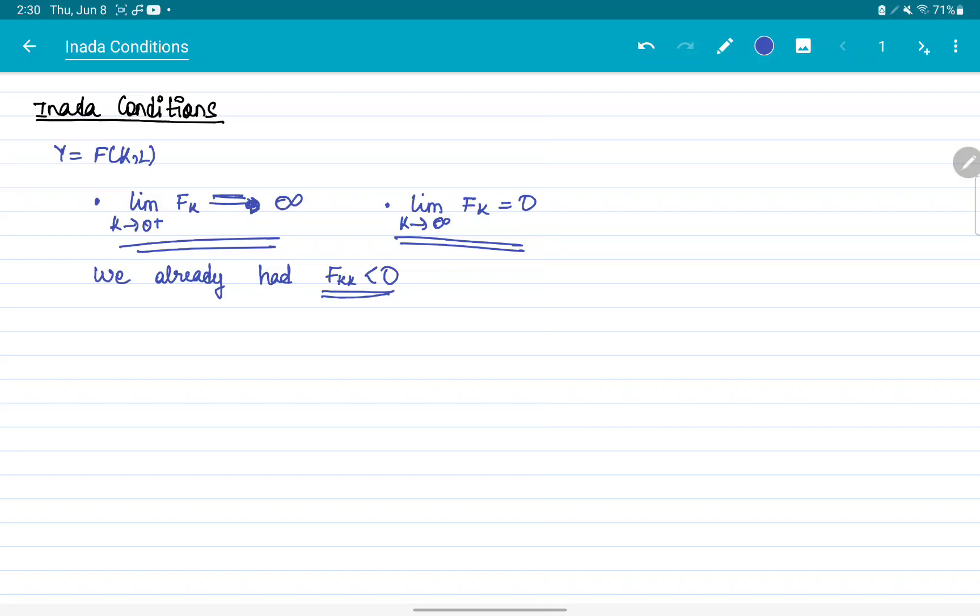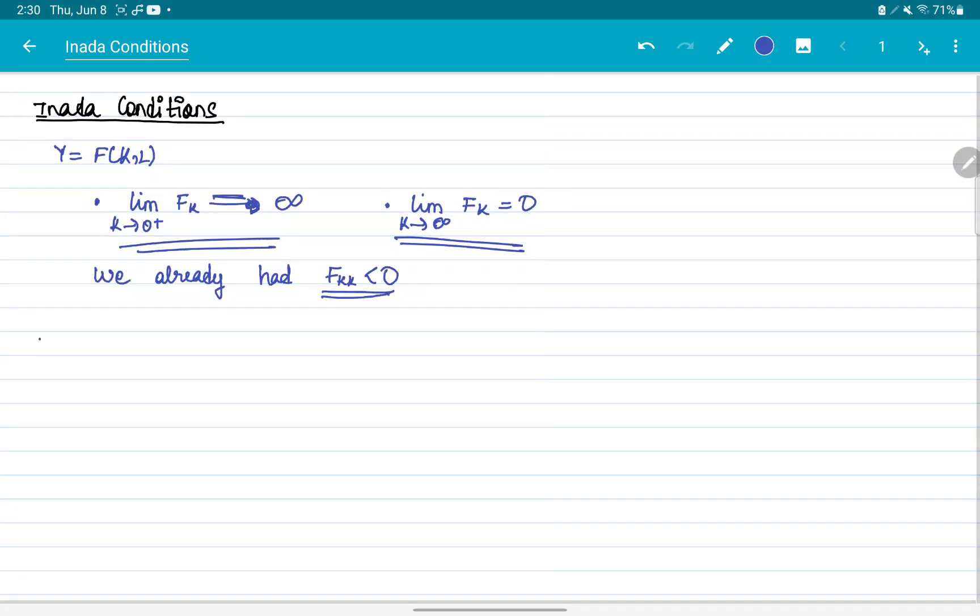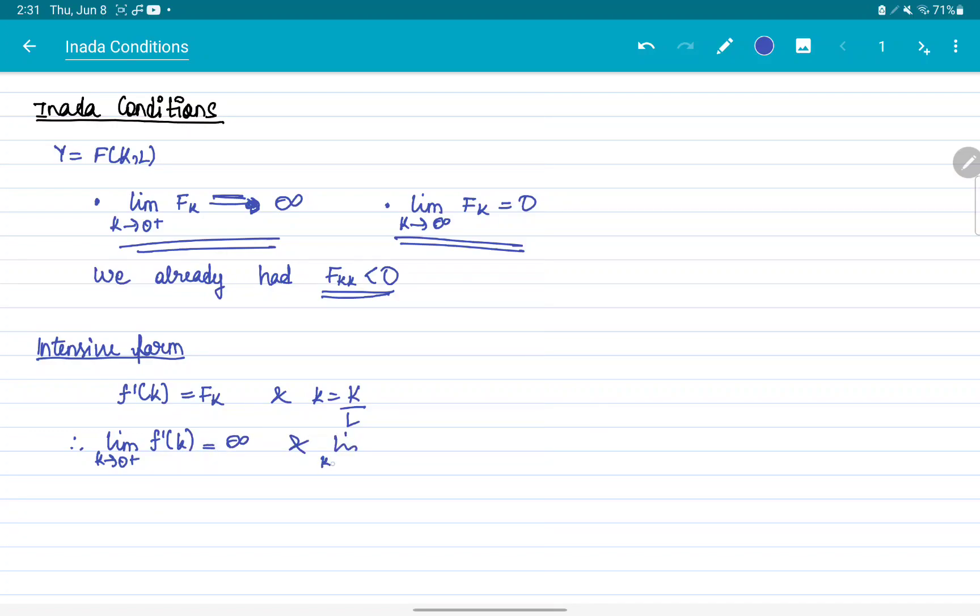So how does this interact with the intensive form production function? Now, you know that f dash k equals fk, and of course small k is just k by l. And therefore, limit as small k tends to 0 plus of f dash k is also infinity, and limit as small k tends to infinity of f dash k is also 0.